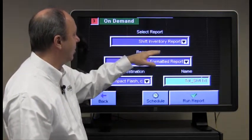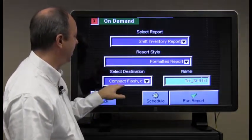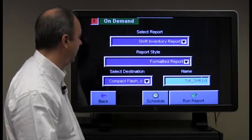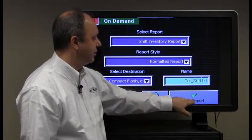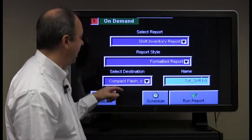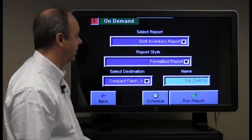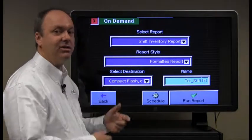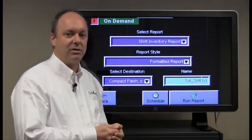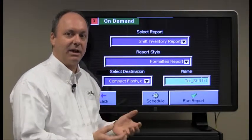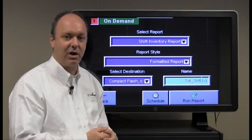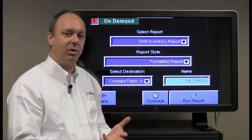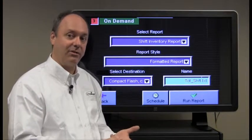So we have the report we want, the style we want and the destination as well as the name. The operator at this point would simply press run report and it would write the report out to the compact flash card. Now since the compact flash card is the destination in this example, it would require that the user be able to get that off of the compact flash card using an Ethernet connection with what's referred to as a file transfer protocol program or an FTP connection.